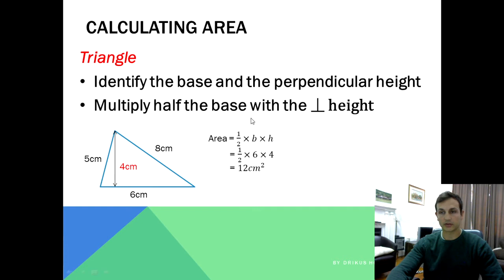The area of a triangle is half base times height. Half times 6 times 4, and that gives you 12 centimeters squared. That's how you would do it for a triangle that doesn't have a right angle.